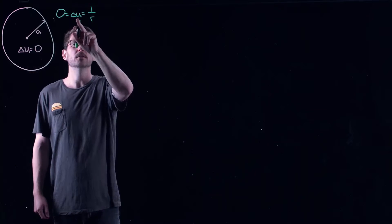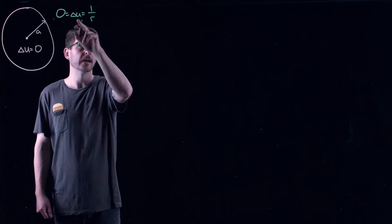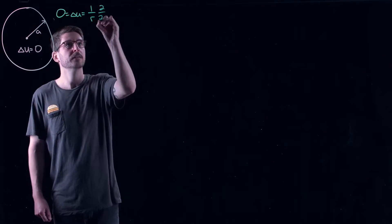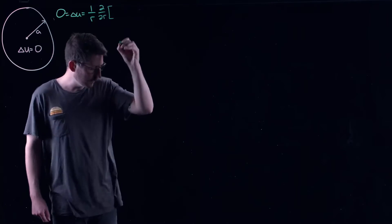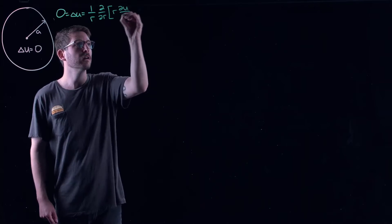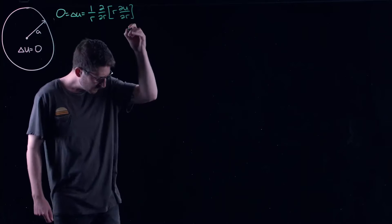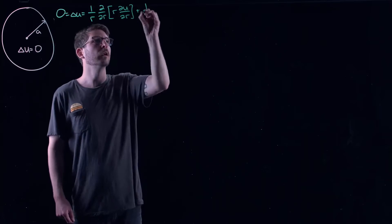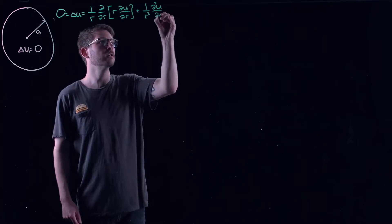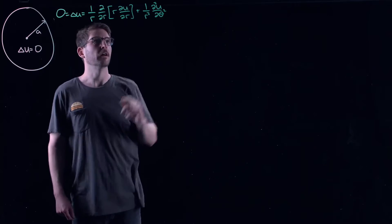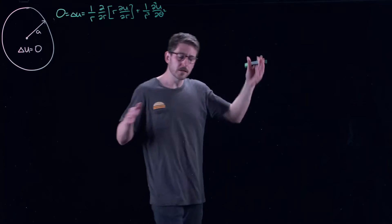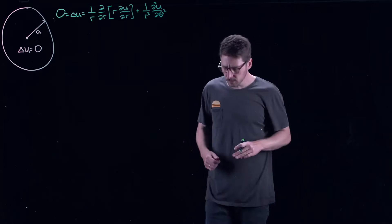I'm going to assume U is a function of R and theta — the polar variables in the plane. Here I get my polar coordinate Laplacian: I get an R term here, and then plus one over R squared, partial squared U, partial theta squared. R and theta are my polar coordinates in the plane. R is the radial variable and theta is the azimuthal variable.